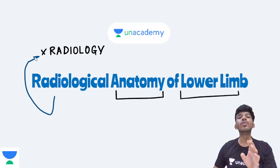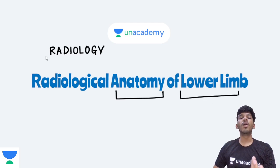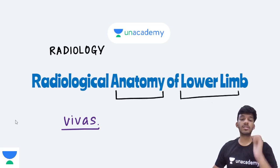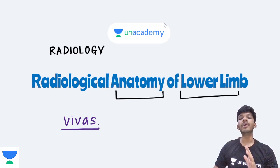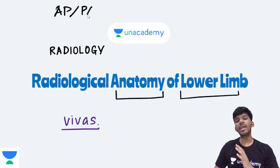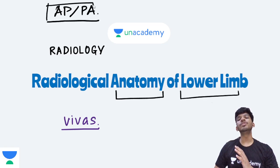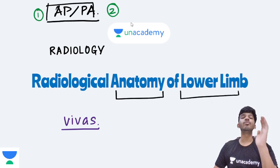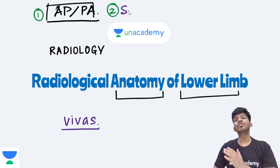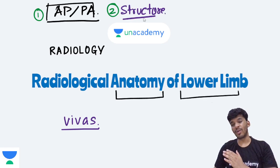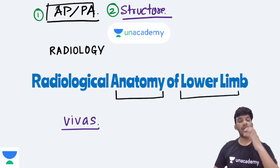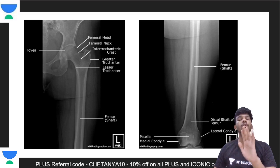We just want to identify the basic anatomical structures of the lower limb on a radiograph. This is important because it will help you understand radiology, and it is also a part of your VIVAS in your examinations. The first thing to be able to do is identify whether it is an AP view, a PA view, or a lateral view, and what structure or type of x-ray is being shown — chest, abdominal, lower limb, hip joint, or knee.